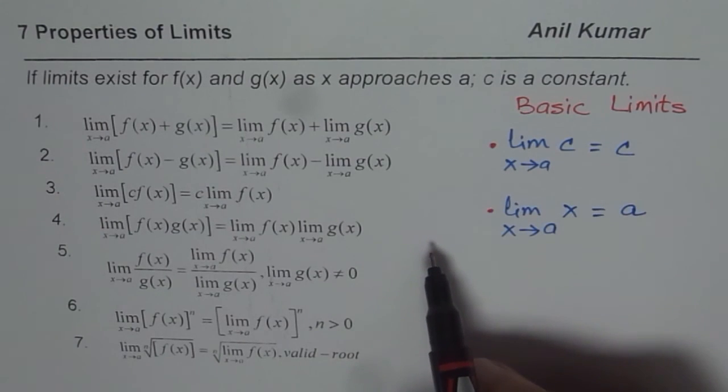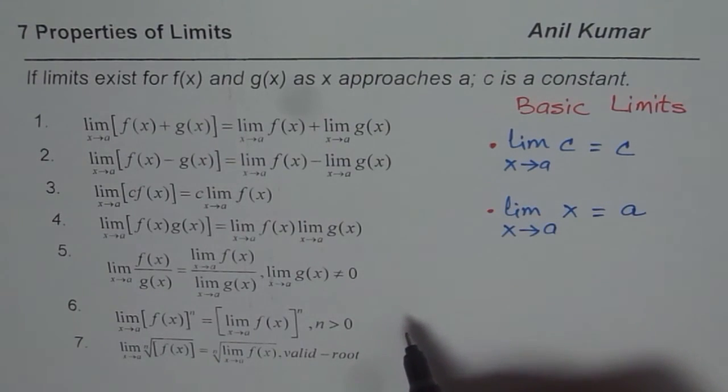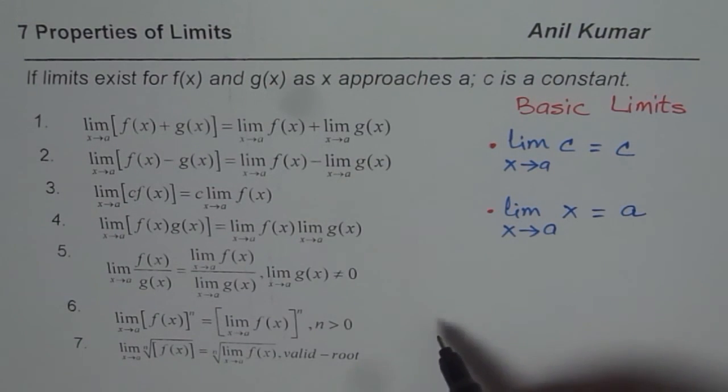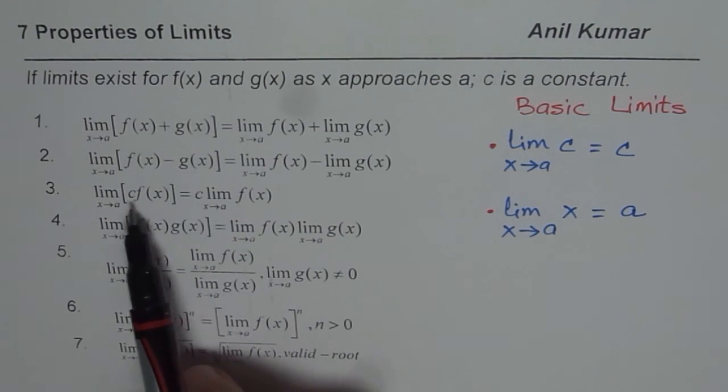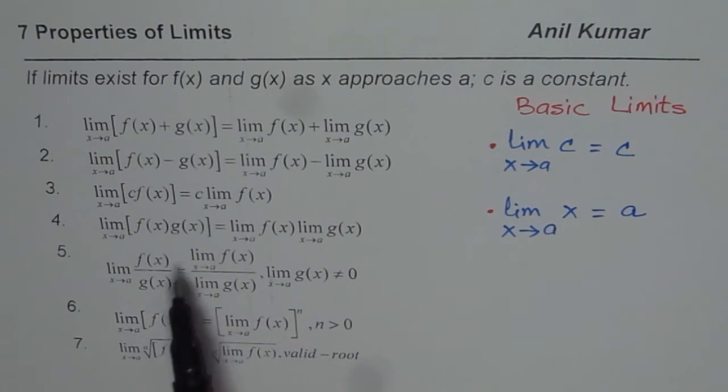I hope the concept is clear that there are a few properties of limits, normally number seven in every book. They may be combined in a different way. The idea here is to describe them as sum of limits, difference of limits, product with a constant, product of limits, quotient of limits, limit of power, and limit of roots. That description is good enough for solving limits using properties of limits.